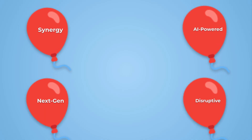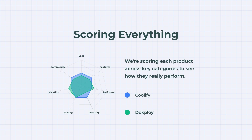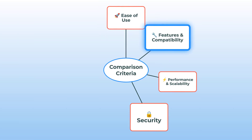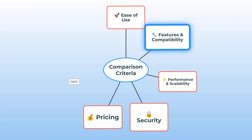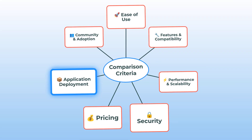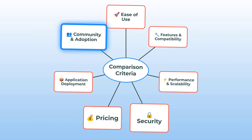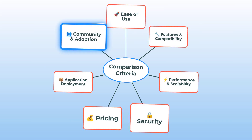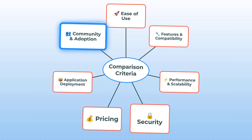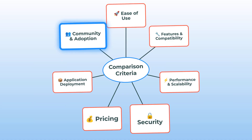Let's skip the buzzwords and dig into what actually matters. Each key category scores points, and by the end, you'll see exactly who comes out on top. The result could surprise you. Here's how we're going to break it down: ease of use, features and compatibility, performance and scalability, security, pricing, application deployment, and finally, community and adoption. This way, you'll get a 360-degree view and know what to expect from both platforms.